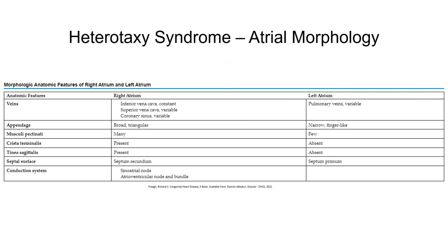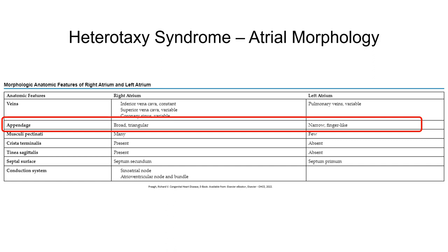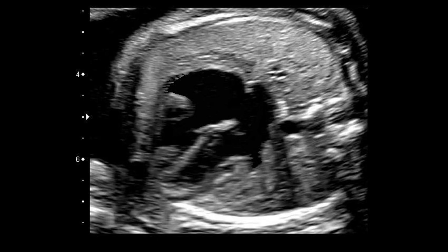Another feature used to discern between heterotaxy subtypes — right atrial isomerism versus left atrial isomerism — is the atrial appendages. On this four-chamber view you can clearly see the atrial appendages: there is a broad triangular-shaped right atrial appendage on the right atrium and a narrow finger-like appendage for the left atrium. These features will be seen bilaterally in either left or right atrial isomerism, and are a good indicator of the heterotaxy subtype in combination with other findings.